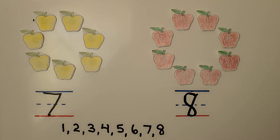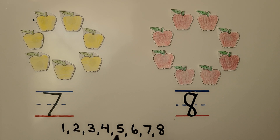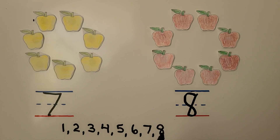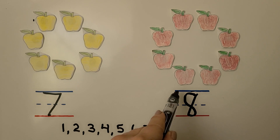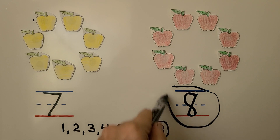The greater number comes after in counting order. We need to circle the greater number. We have the numbers in counting order: one, two, three, four, five, six, seven. Here's seven, and here's eight. Eight comes after seven in counting order, so eight is the greater number. We can circle the eight.